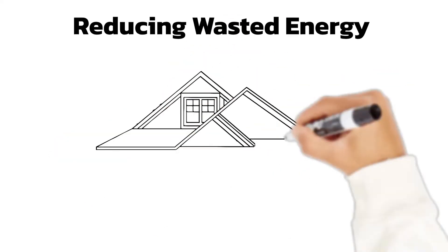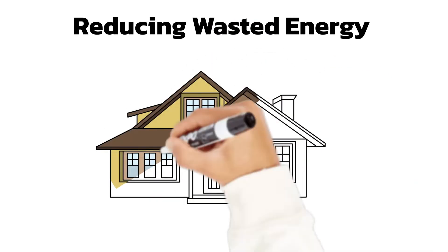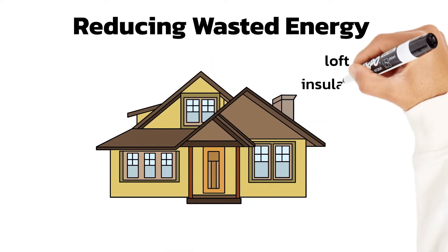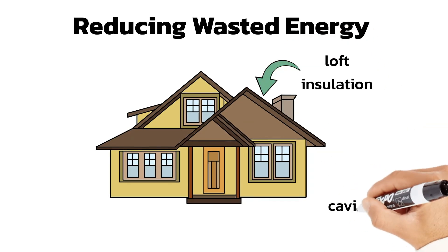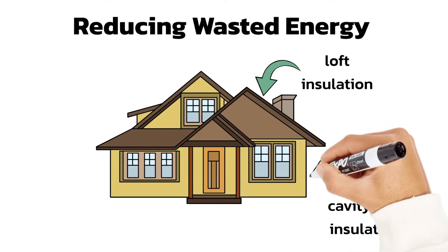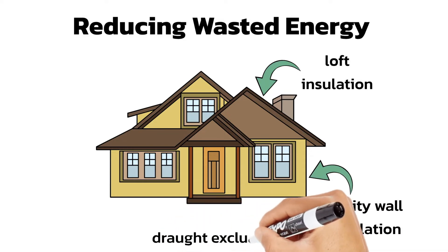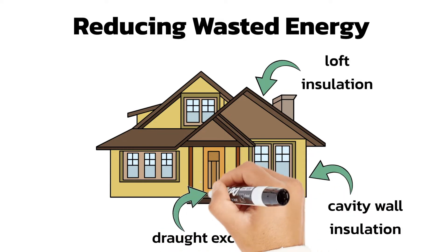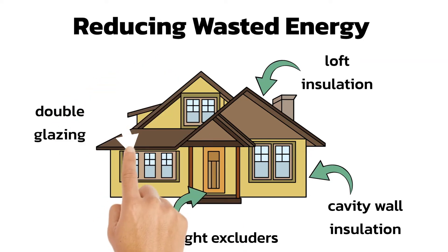When you heat up your home, you want it to stay warm for as long as possible. But if the house isn't well insulated, this thermal energy can be dissipated to the surroundings and it can get cold very quickly. To stop this, we can use insulation to reduce the energy losses. Examples of this include loft insulation, cavity wall insulation, draft excluders and double glazing.